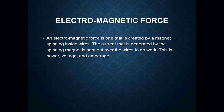Electromagnetic force is another term that we will hear in many different ways. Another term for electromagnetic force is electromotive force, and that is created by a magnet spinning inside wires. The current that is generated by the spinning magnet is then sent out over the wires to do work — this is power, voltage, and amperage. Electromagnetic force is really what generators are doing. A generator is nothing more than a gigantic motor that's spinning, and that spinning generates electricity, which is then sent out over your power lines and into your home.